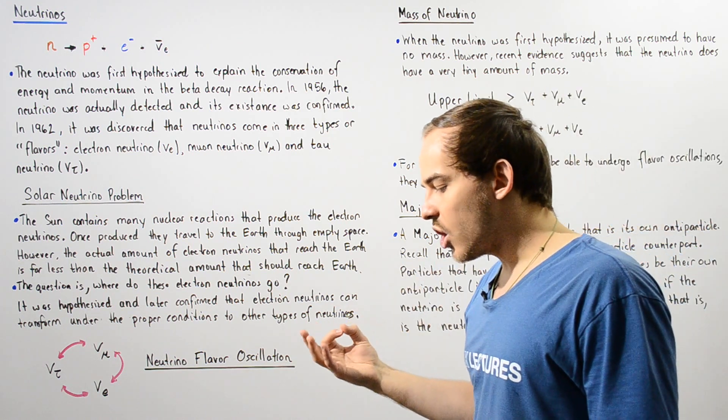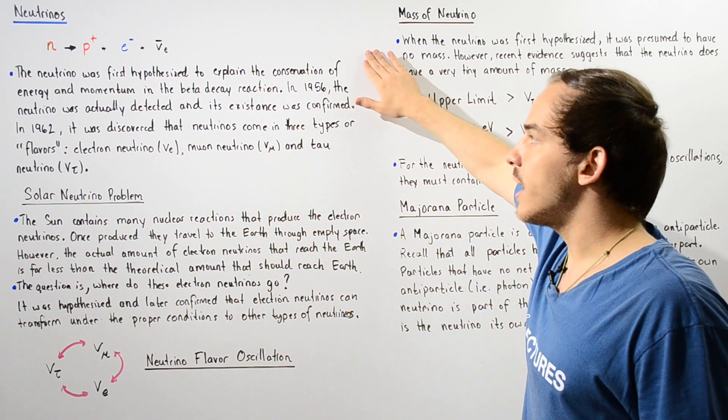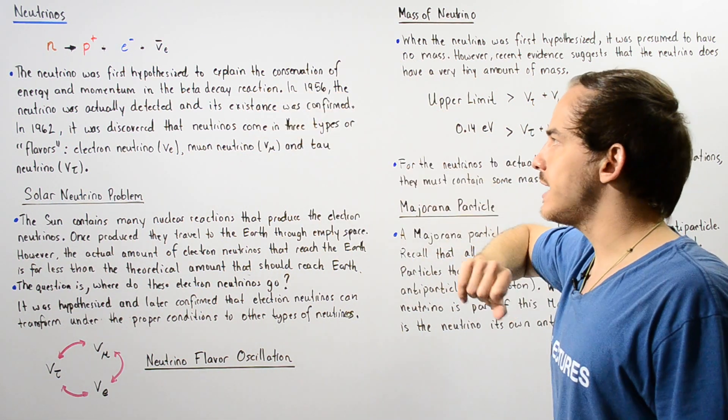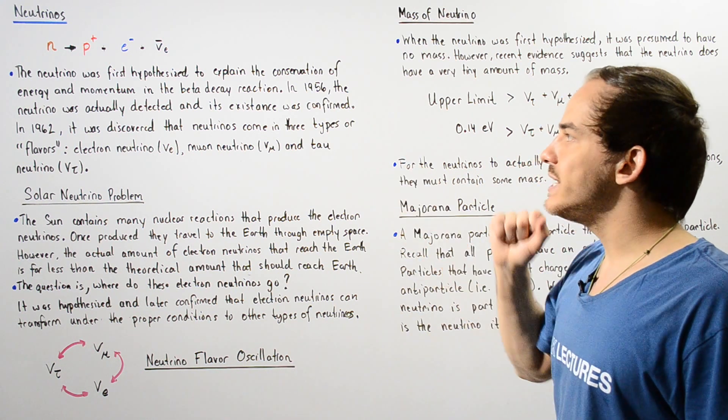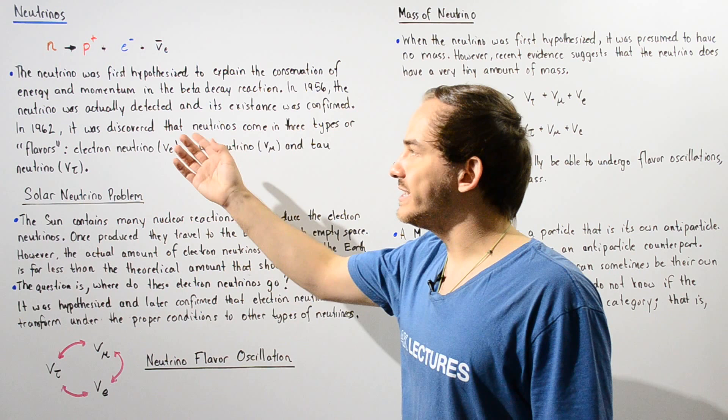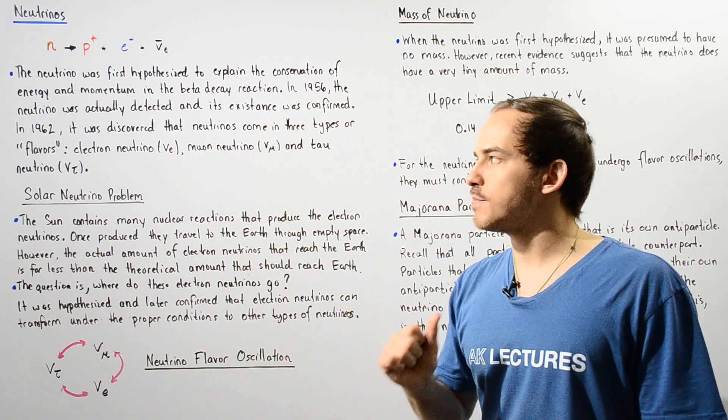Now the neutrino was first hypothesized to explain the conservation of energy and momentum in the following beta decay reaction. In 1956, the neutrino was actually detected and its existence was confirmed experimentally.